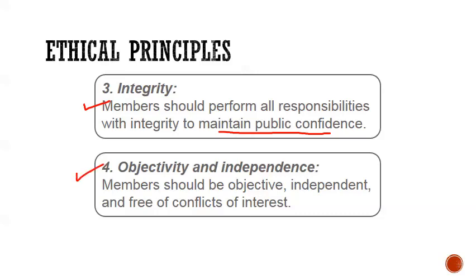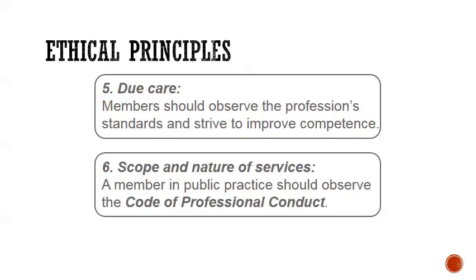Fourth, you have to be objective and independent — free from conflicts of interest. For example, if you're an auditor, you can't audit a company and own stock in that company. That would be a conflict of interest; you would have to sell your stock or not be on that engagement. Fifth is due professional care: members should observe the profession's standards and strive to improve competence — you're going to be judged on how other professional accountants would have acted in your situation. Sixth is scope and nature of services: if you're in public accounting, you have to observe the code of professional conduct, and even if you're in private accounting and you're a CPA, you do have to follow these rules.